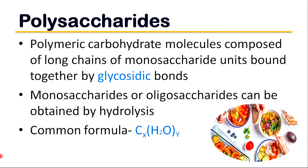The next most important topic in carbohydrate classification is polysaccharides. They are polymeric carbohydrate molecules composed of long chains of monosaccharide units bound together by glycosidic bonds. We can obtain monosaccharides or oligosaccharides by hydrolyzing polysaccharides. The common formula of polysaccharides is CₓH₂Oᵧ.